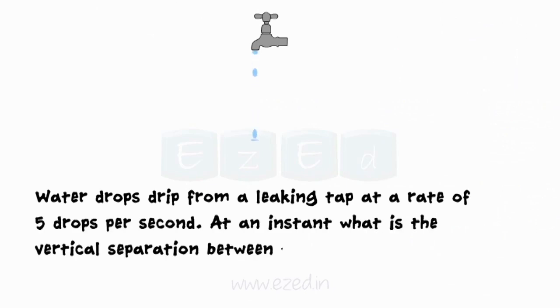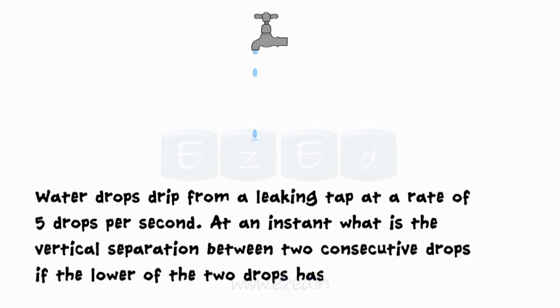Now let us analyze the motion of a droplet. Water drops drip from a leaking tap at a rate of 5 drops per second. At an instant, what is the vertical separation between two consecutive drops if the lower of the two drops has a velocity of 4.5 meter per second.